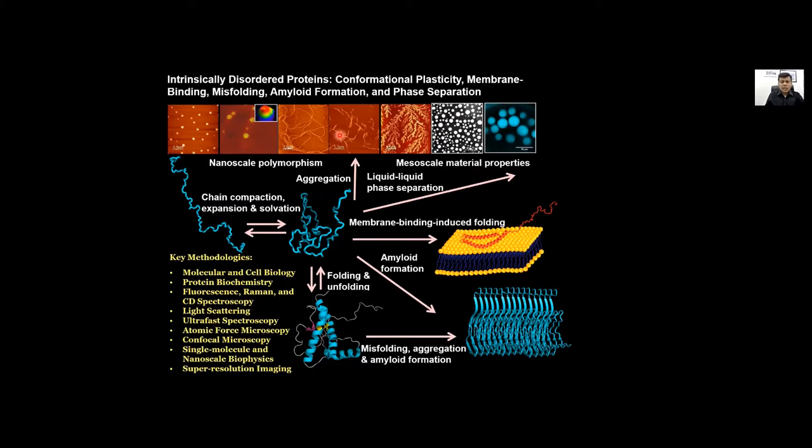These nanostructures have diverse exquisite nanoscale morphologies ranging from spherical oligomers to pore-like structures to different kinds of fibular architecture. In the last couple of years, we have been immensely interested in liquid-liquid phase separation of intrinsically disordered proteins.